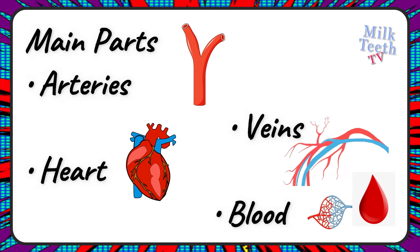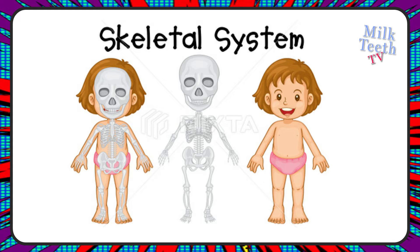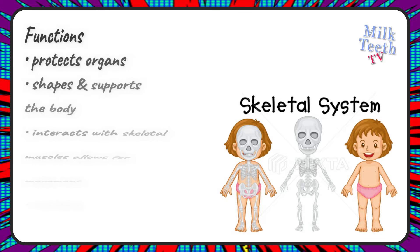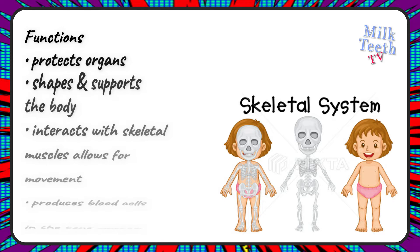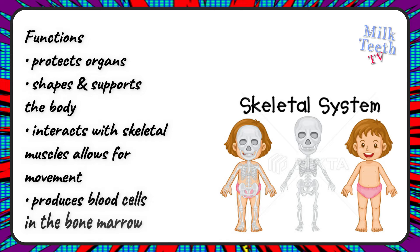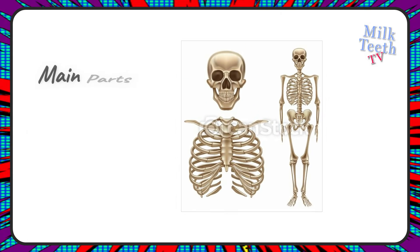The skeletal system. Functions of the skeletal system: protect organs, shapes and supports the body, interacts with skeletal muscles to allow for movement, produces blood cells in the bone marrow, and stores minerals such as calcium and phosphorus.